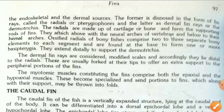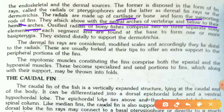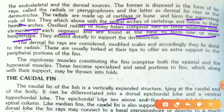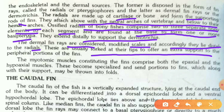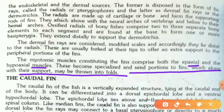The radials are made of cartilage or bone and form the supporting rods of fins. They attach above to the neural arches of vertebrae and below to the hemal arches. Ossified radials of bony fishes comprise two to three separate bony elements per segment and are found at the base forming one or more basal pterygia, extending distally to support the dermotriquea. The dermal fin rays are considered modified scales and lie distal to the radials, offering extra support to the peripheral portion of the fins.